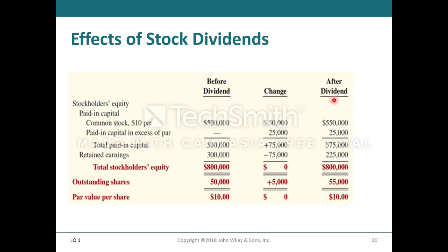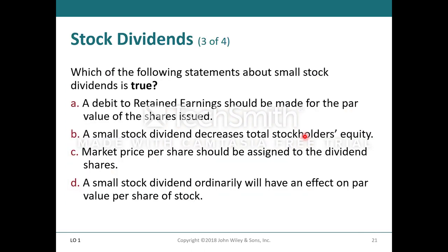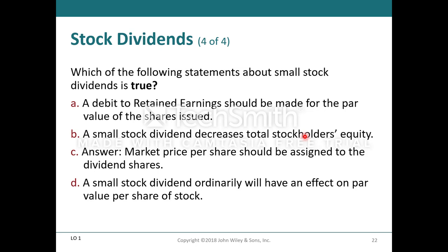When Midland issues the dividend shares, you debit common stock dividends distributable and credit common stock. The effects of stock dividends: before the dividend, the outstanding shares were 50,000; after the dividend, shares outstanding become 55,000. Everything else in stockholders' equity stays the same. For small stock dividends, market price per share — not par value — should be assigned to the dividend shares.